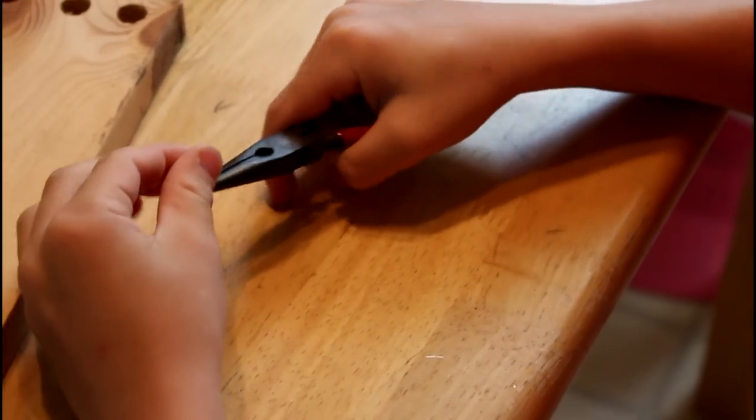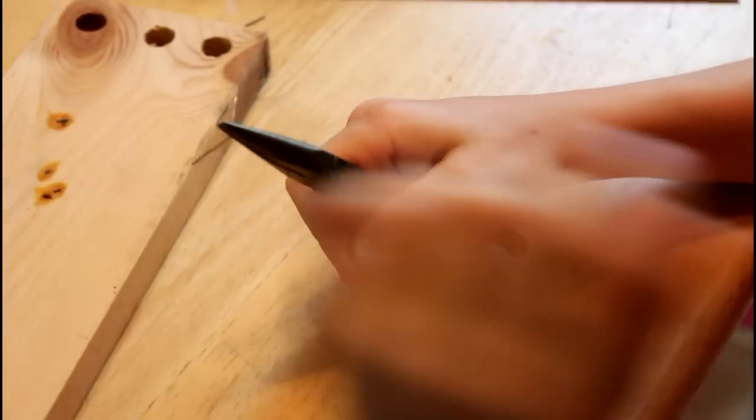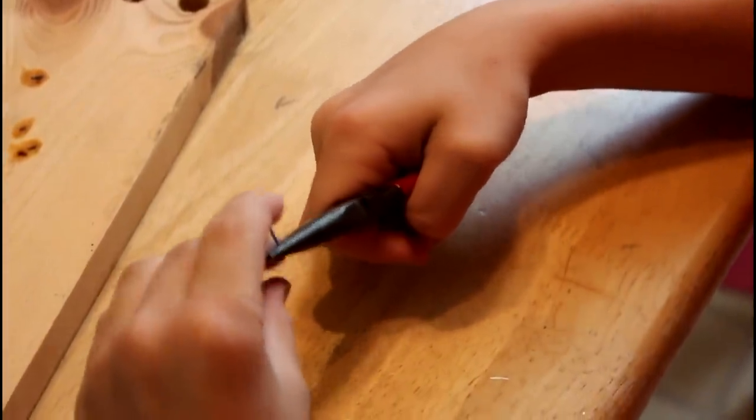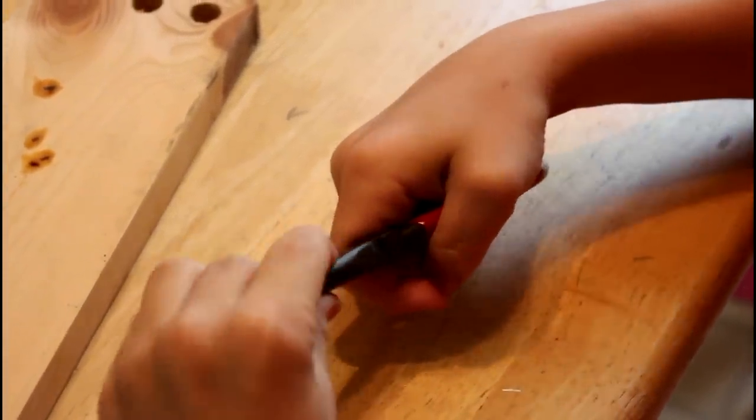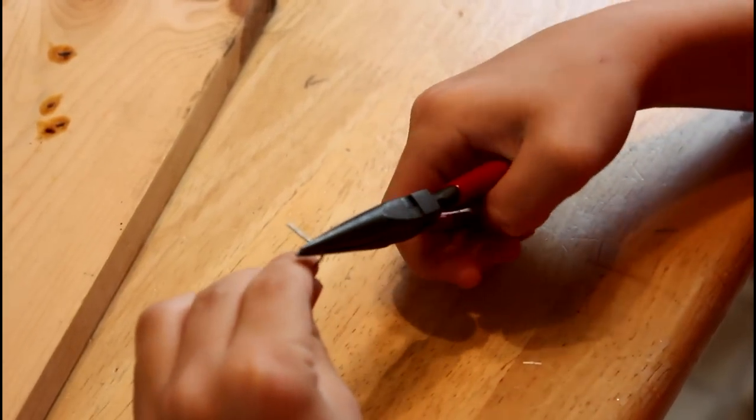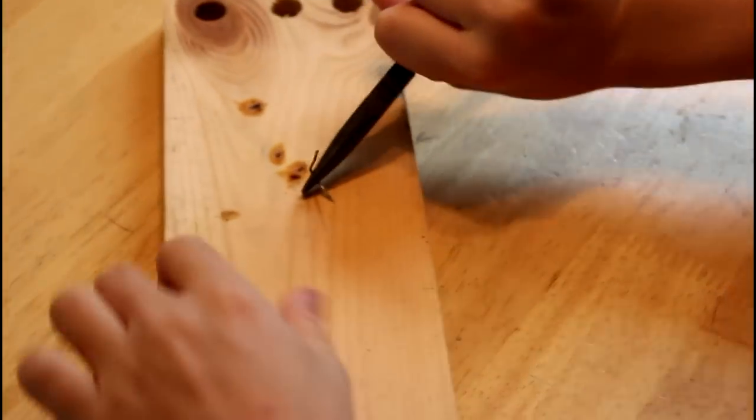You can now put a 90 degree bend about four millimeters from the first bend on the short side. It might make it a little easier for you if you just push it against a block of wood.